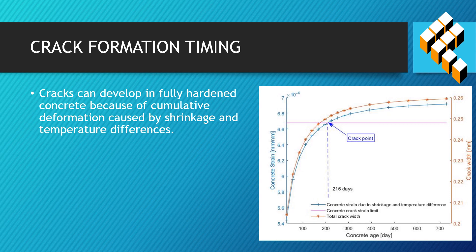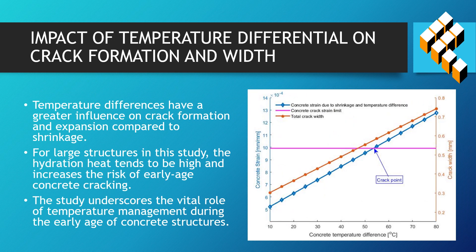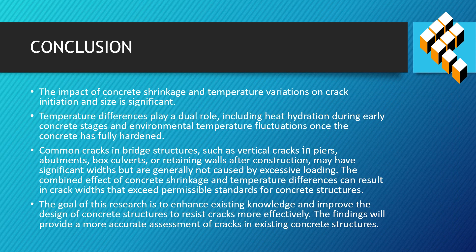Cracks can develop in fully hardened concrete because of cumulative deformation caused by shrinkage and temperature differences. Temperature differences have a greater influence on crack formation and expansion compared to shrinkage. The impact of concrete shrinkage and temperature variations on crack initiation and size is significant. Temperature differences play a dual role, including heat of hydration during early concrete stages and environmental temperature fluctuations once the concrete has fully hardened.